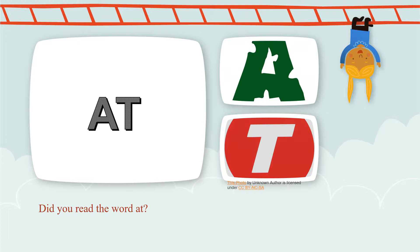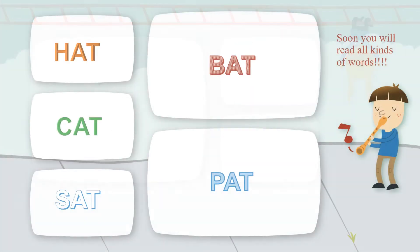Read the word 'at' — that's great! Now you can add letters to the beginning of the word 'at' to make other words. Such as B says 'bat,' P says 'pat,' S says 'sat,' C says 'cat,' H says 'hat.' So now all of them are the same word with a different beginning.